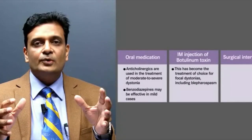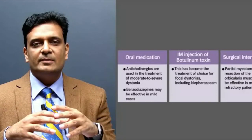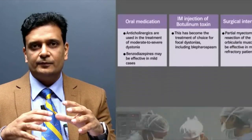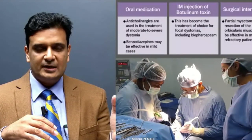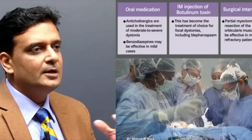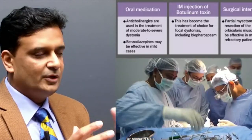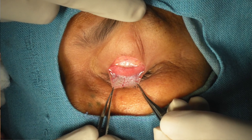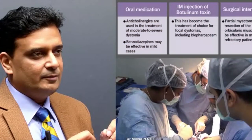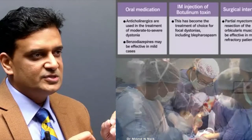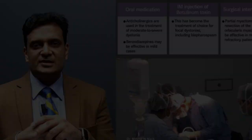In rare patients where botulinum toxin may not work, or the duration of effect is too short, surgery can be considered. Surgical options include myectomy — removal of the overactive muscles — or neurectomy, where selective branches supplying the orbicularis oculi are excised.